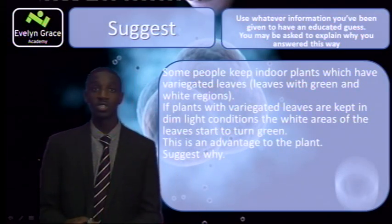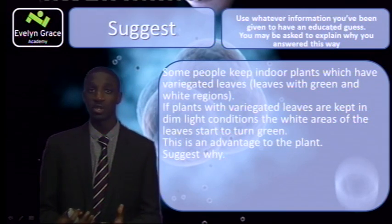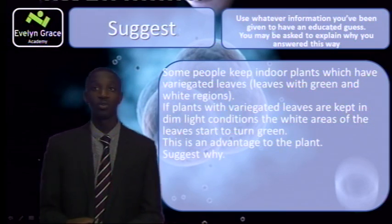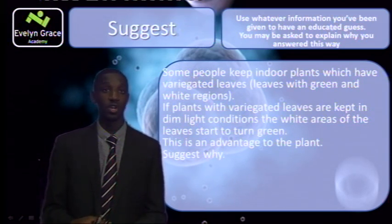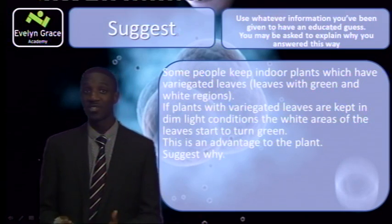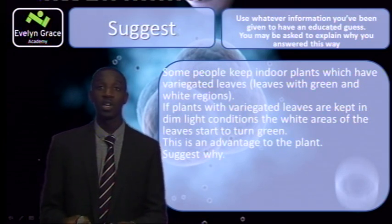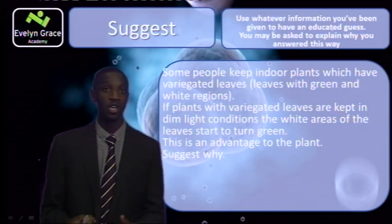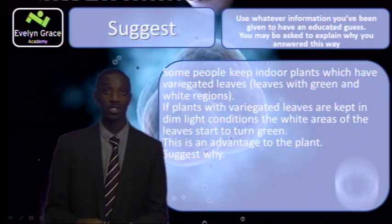Suggest. What suggest wants you to do is use whatever information you've been given and make an educated guess. You may have to justify your answer. Example: some people keep indoor plants with variegated leaves — leaves with green and white regions. If plants with variegated leaves are kept in dim light conditions, the white areas of the leaves start to turn green. This is an advantage to the plant — suggest why. The examiner is asking you to call on your knowledge of photosynthesis. You may say that because the white areas turned green, there is more chlorophyll, and therefore a greater level of photosynthesis. That is an educated guess using your knowledge — that would be two marks.